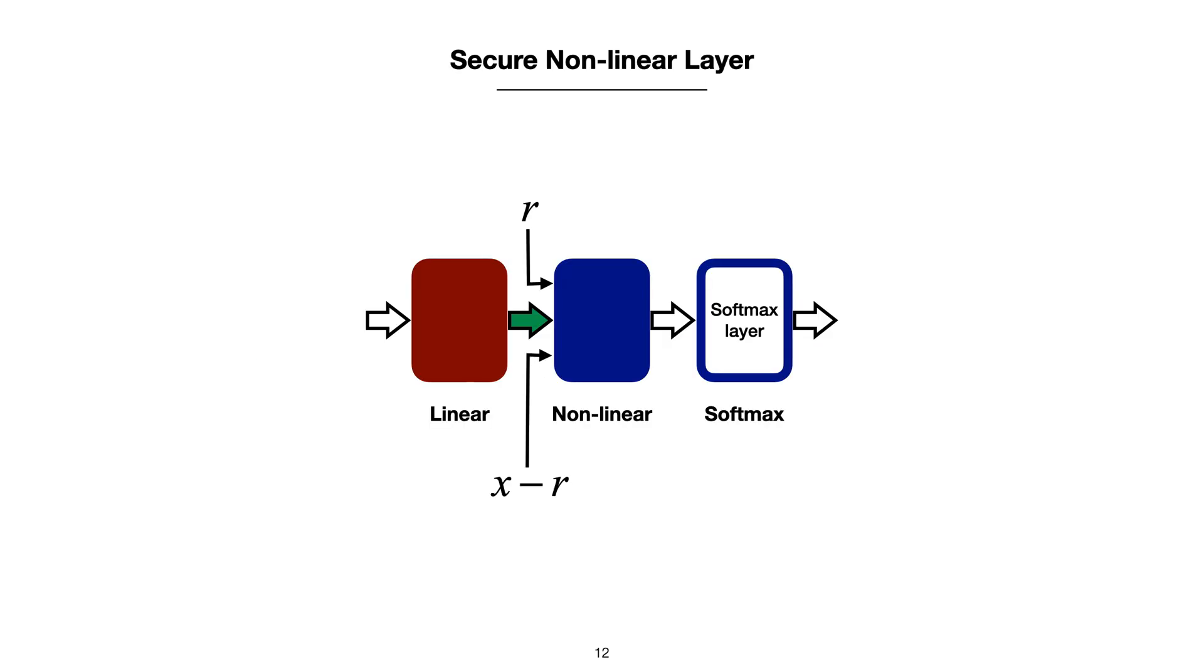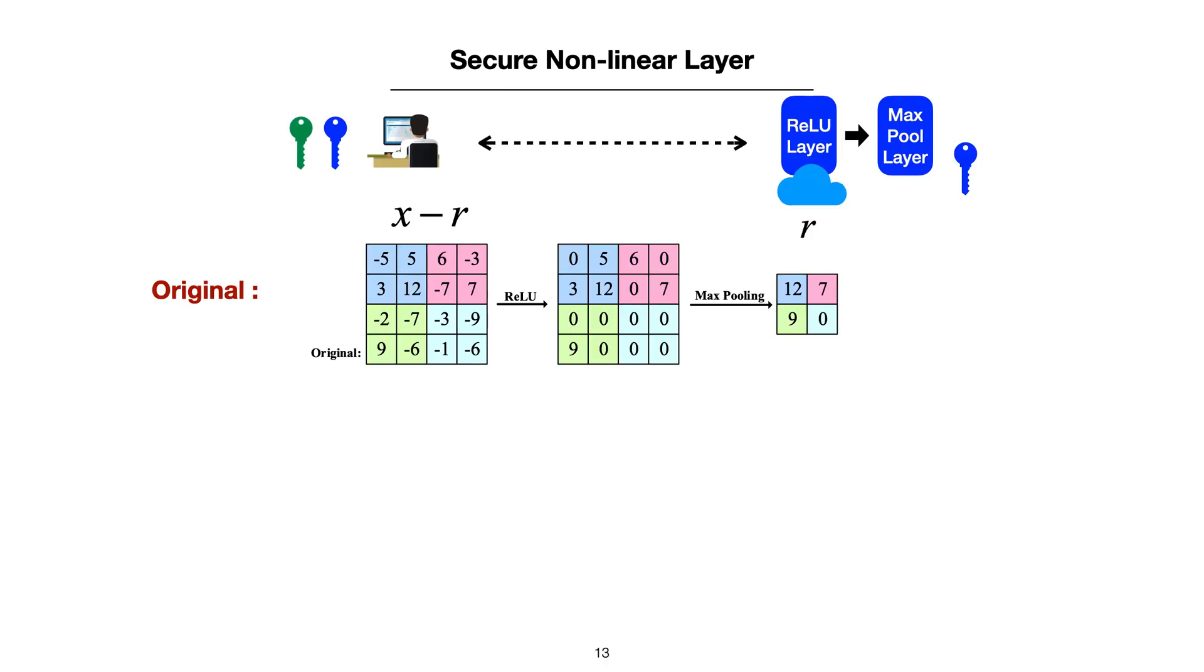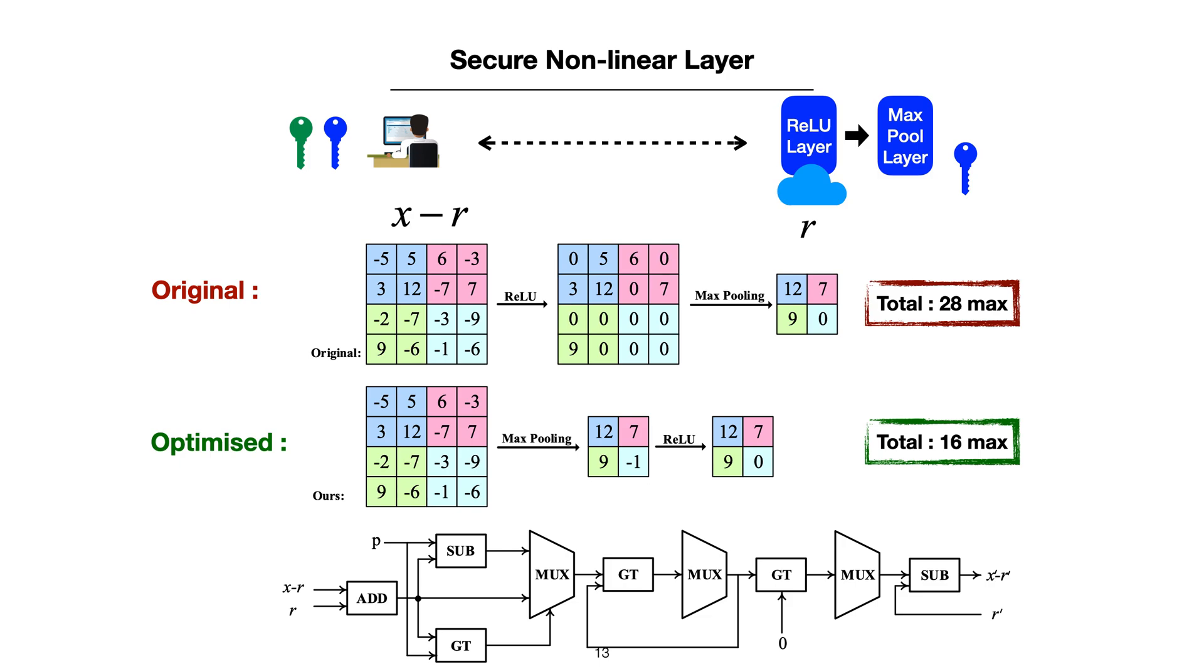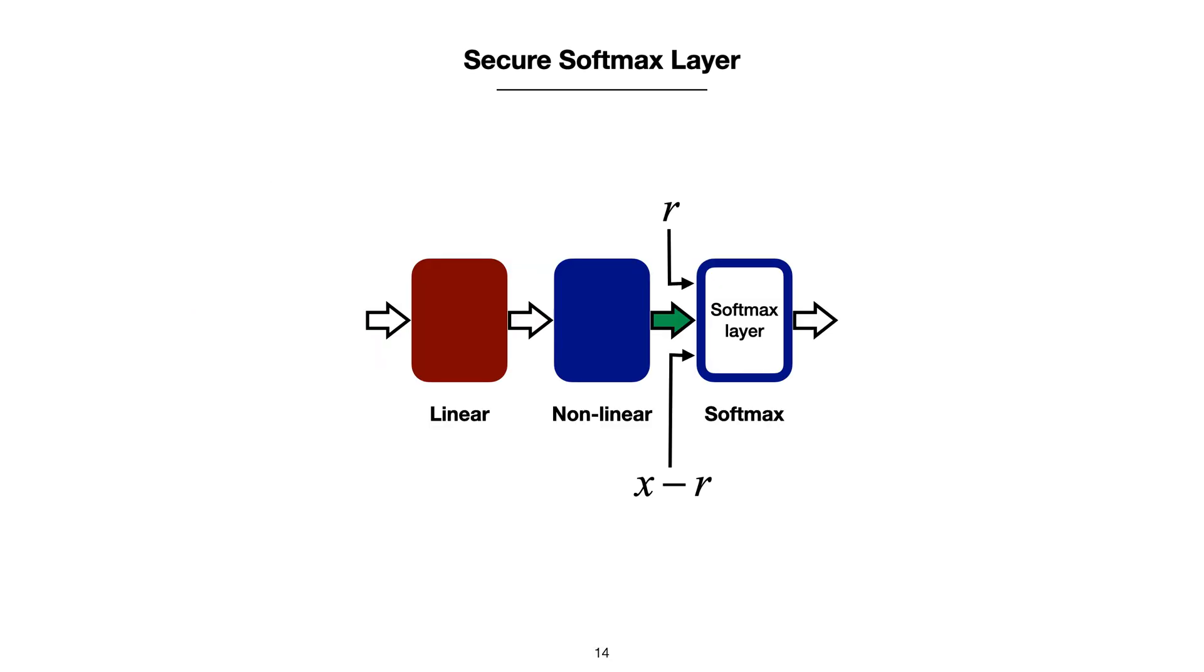The output of a linear layer is split into two parts, and they are also the inputs to nonlinear layers. In many cases, ReLU and max pooling layers are used together. We can see that in the original pipeline, the total number of max operations is 28. We can simply reverse the position of these two layers in the pipeline to keep the results unchanged, while reducing the number of max operations to 16. We further design a boolean circuit for secure two-party computation to evaluate max operation.